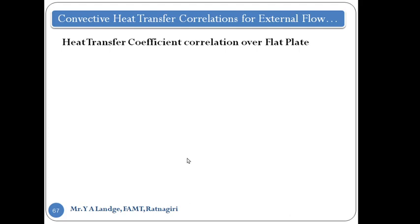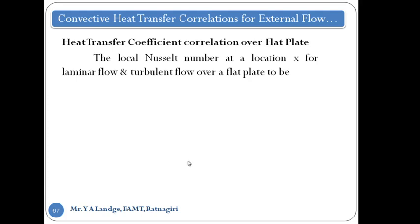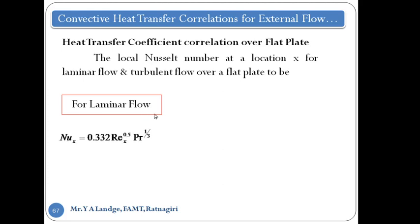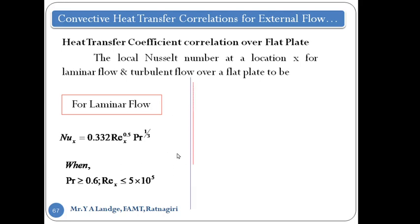Now, the heat transfer correlation overall for the flat plate. We consider the local Nusselt number at location x for laminar flow and turbulent flow over a flat plate — the correlations are different. For laminar flow, the correlation is: Nu_x equals 0.332 times Re_x to a power times Pr to a power. The condition is that the Prandtl number should be greater than 0.6 and the Reynolds number should be less than 5 times 10 to the power 5.